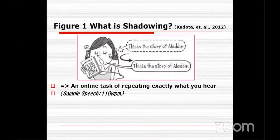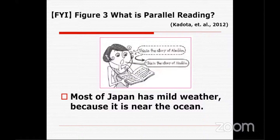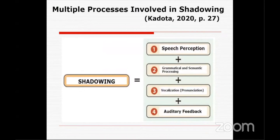What is shadowing? Shadowing is a kind of online task of repeating exactly what we hear. In contrast, a listen-and-repeat task involves a pause — after the speech is heard, we make a repetition during the pause. Parallel reading involves doing two things at the same time: understanding the speech orally while looking at the manuscript and speaking. But actually, shadowing itself involves very multiple processes.